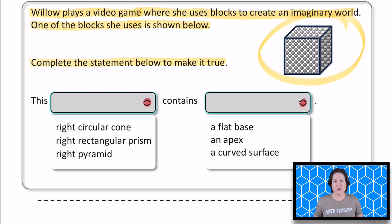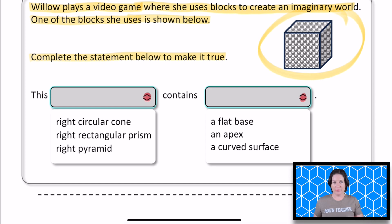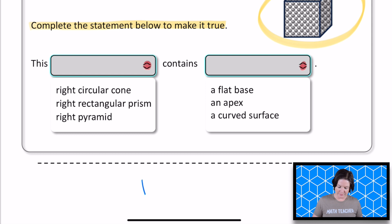This right circular cone. Is the block that Willow is using, does it look like it's a cone? No, it doesn't, does it. A right circular cone would kind of be like this kind of a shape. All right. That would be a right circular cone. That's not what we want.